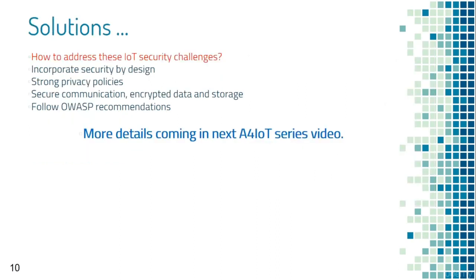To address IoT security challenges, four key measures are needed: we need to incorporate security by design, which is not the case in many current IoT architectures; enforce strong privacy policies; ensure secure communication with encrypted data and storage; and follow OWASP recommendations.